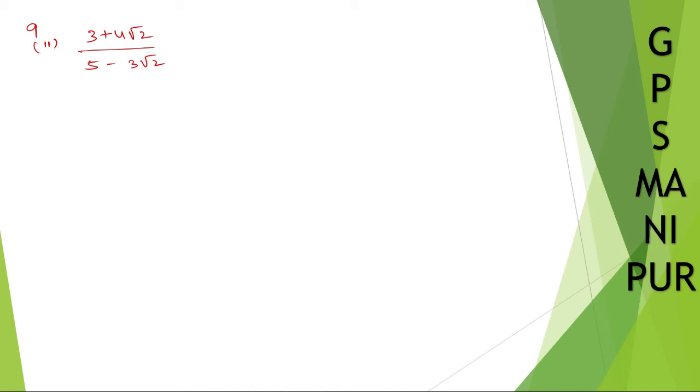The question is quite similar to the previous question, roman number 1. It is not that difficult even. So let me do 3 plus 4 root 2 over 5 minus 3 root 2. Here, if you take this as a and this as b, then it is a minus b.